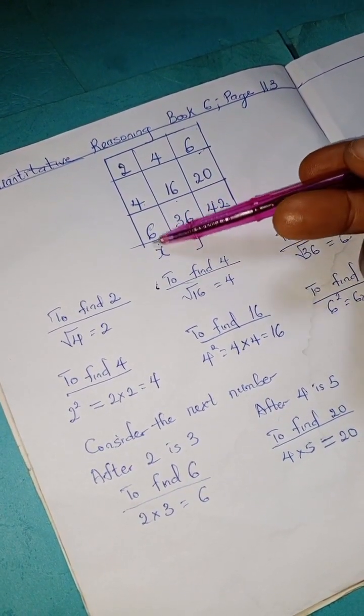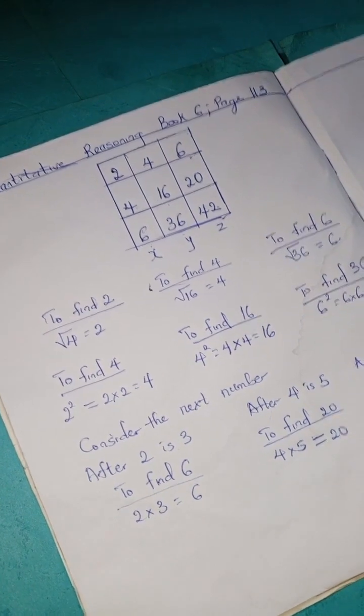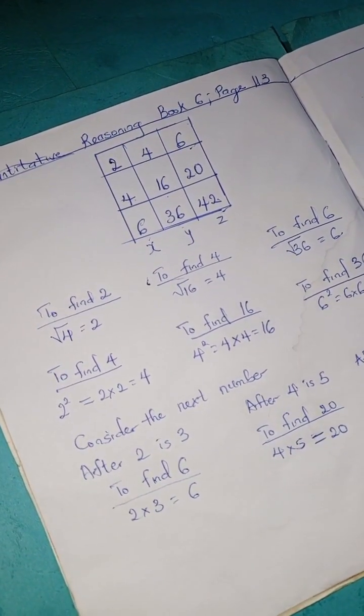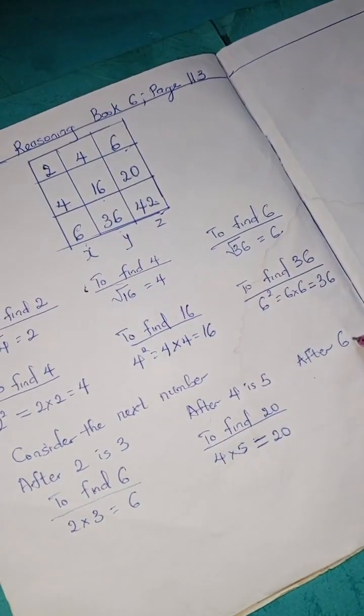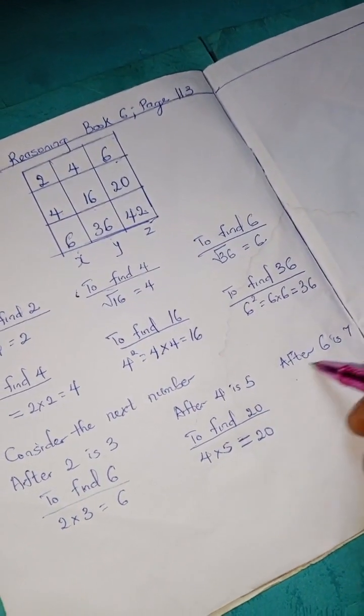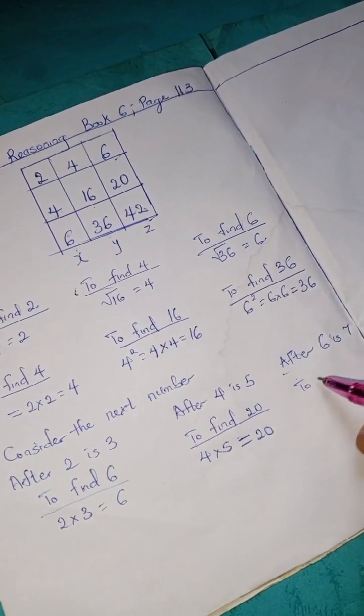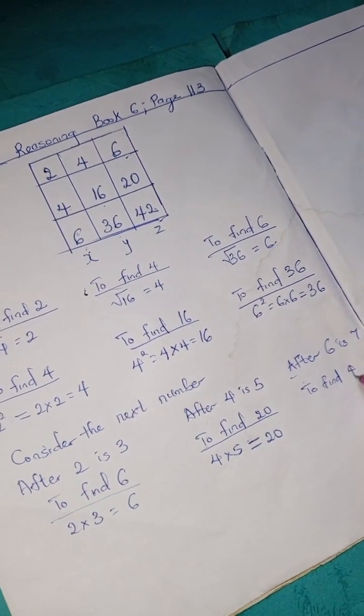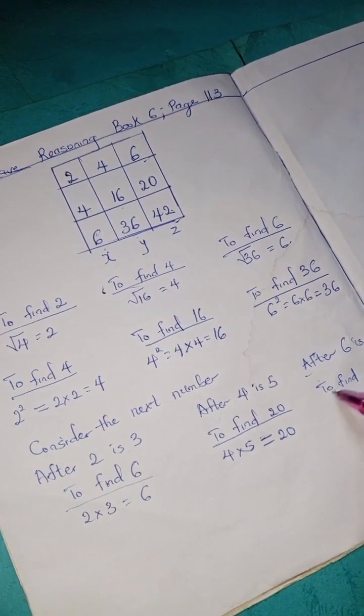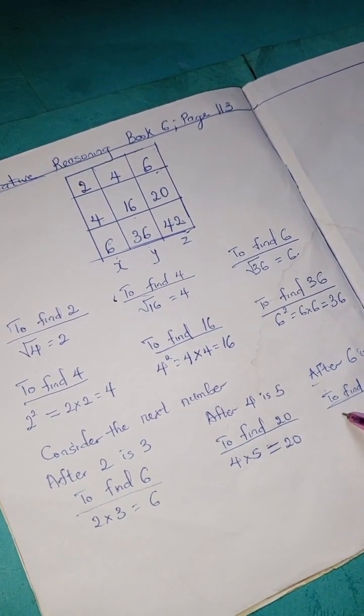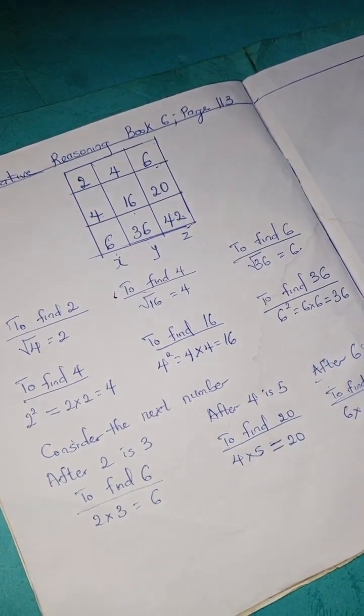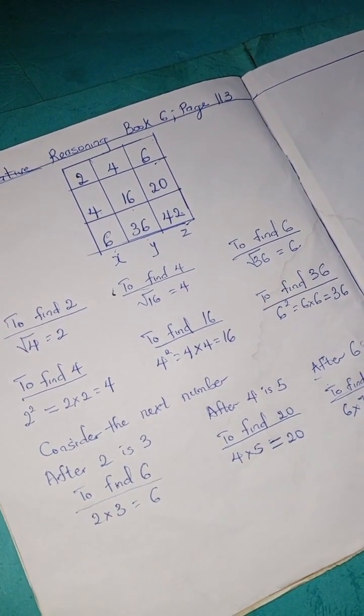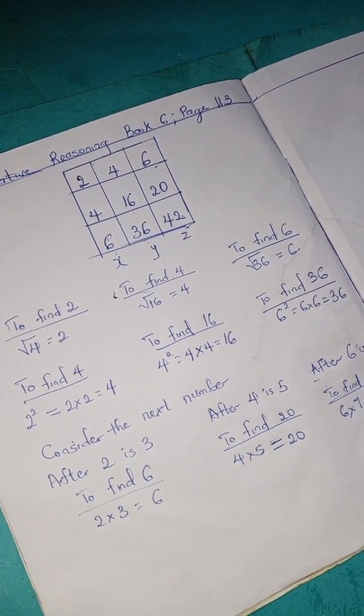Remember, you're going to use the next number after the numbers on column X. So we have after 6 is 7, so we're going to multiply them. To find 42, we're going to have 6 times 7, which is the next number after 6, is 42.